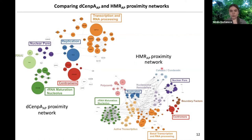Some clusters belong only to one of the two networks. For example, cohesin/condensin, Polycomb, nucleosome remodelers, and boundary factors belong only to the HMR-APEX proximity network, while RNAi belongs only to the Drosophila CENPA-APEX proximity network.